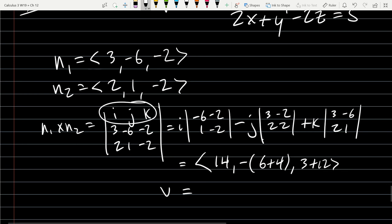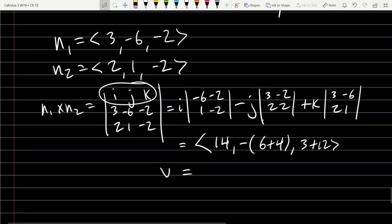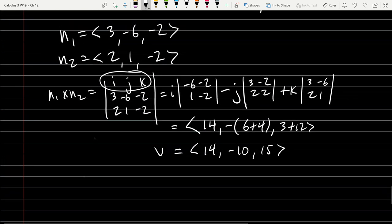So of course this is our v, our slope of our line: <14, -10, 15>. Alright, all we need now is one point in common.